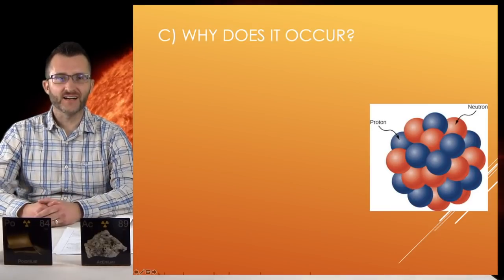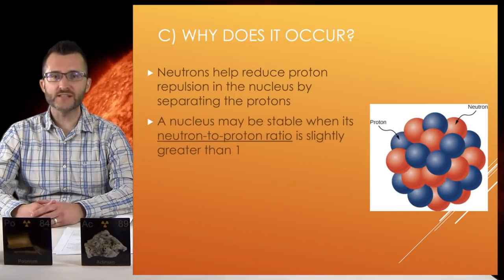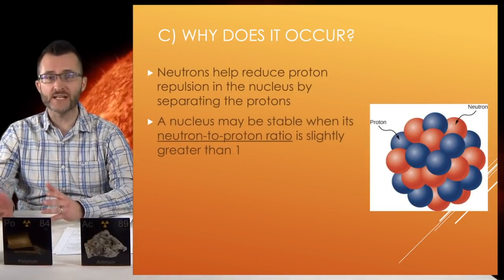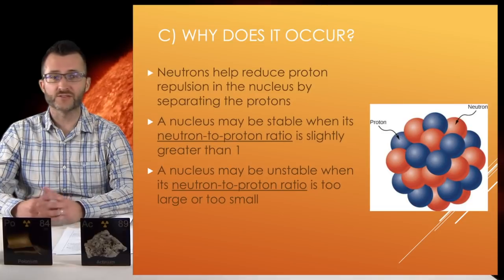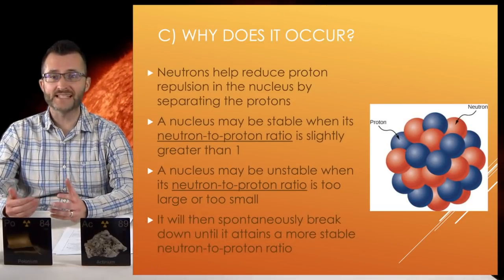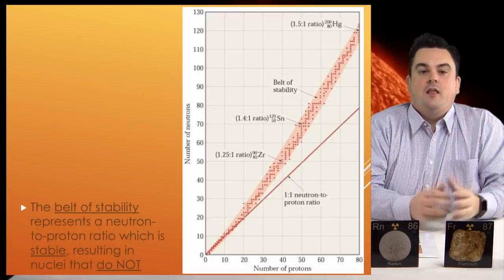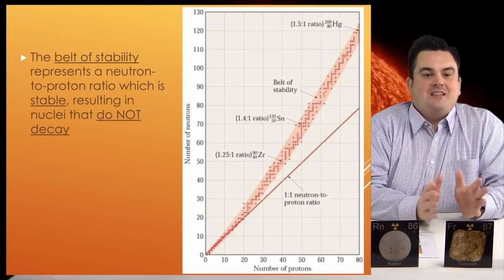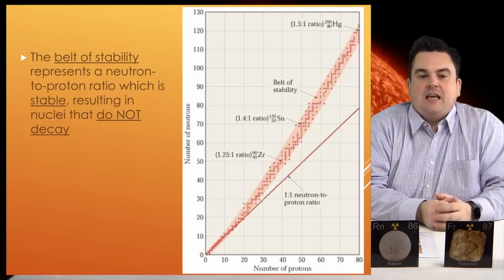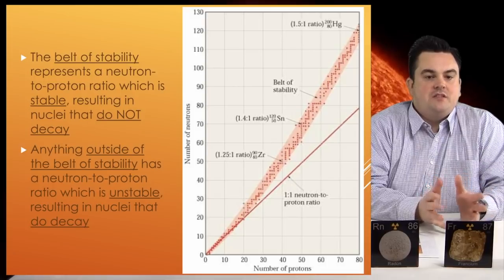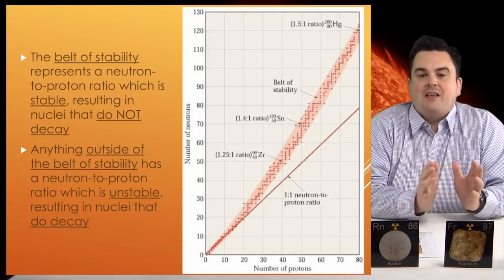Why does it occur? Neutrons help reduce proton repulsion in the nucleus by separating the protons. A nucleus may be stable when its neutron-to-proton ratio is slightly greater than 1. A nucleus may be unstable when its neutron-to-proton ratio is too large or too small. It will then spontaneously break down until it attains a more stable neutron-to-proton ratio.